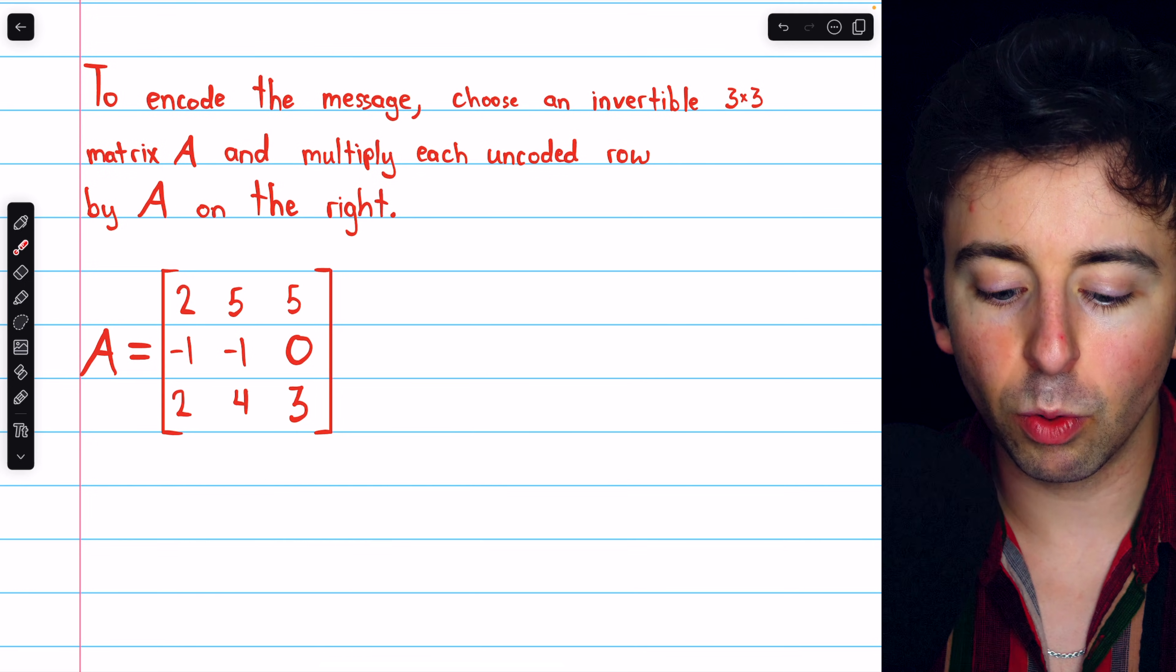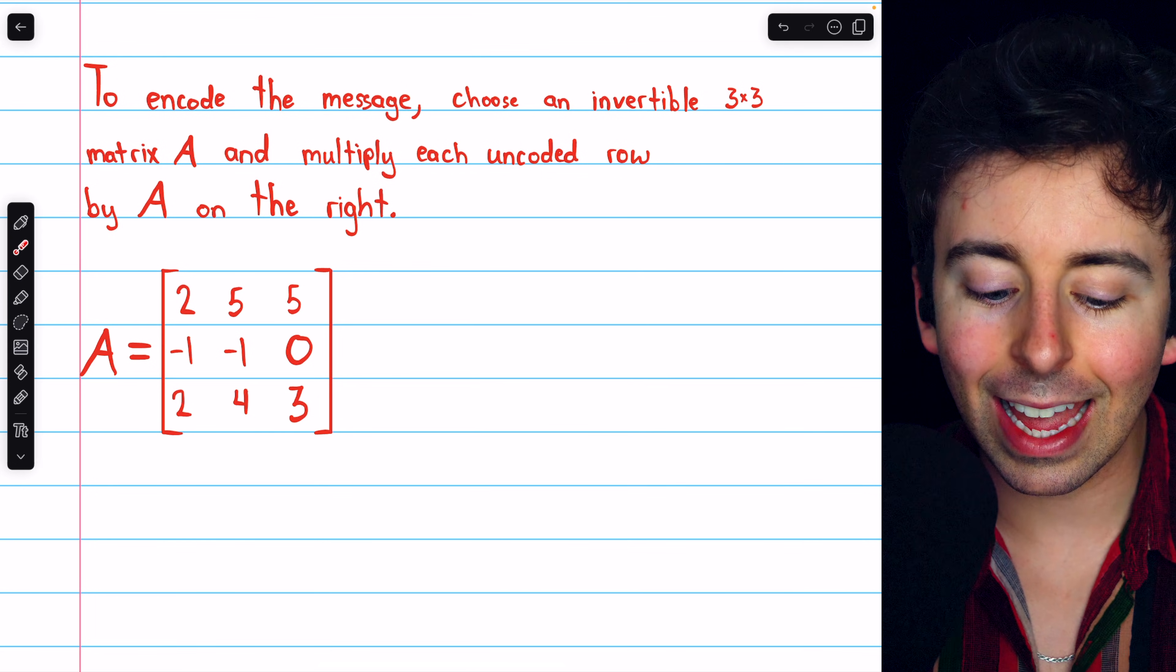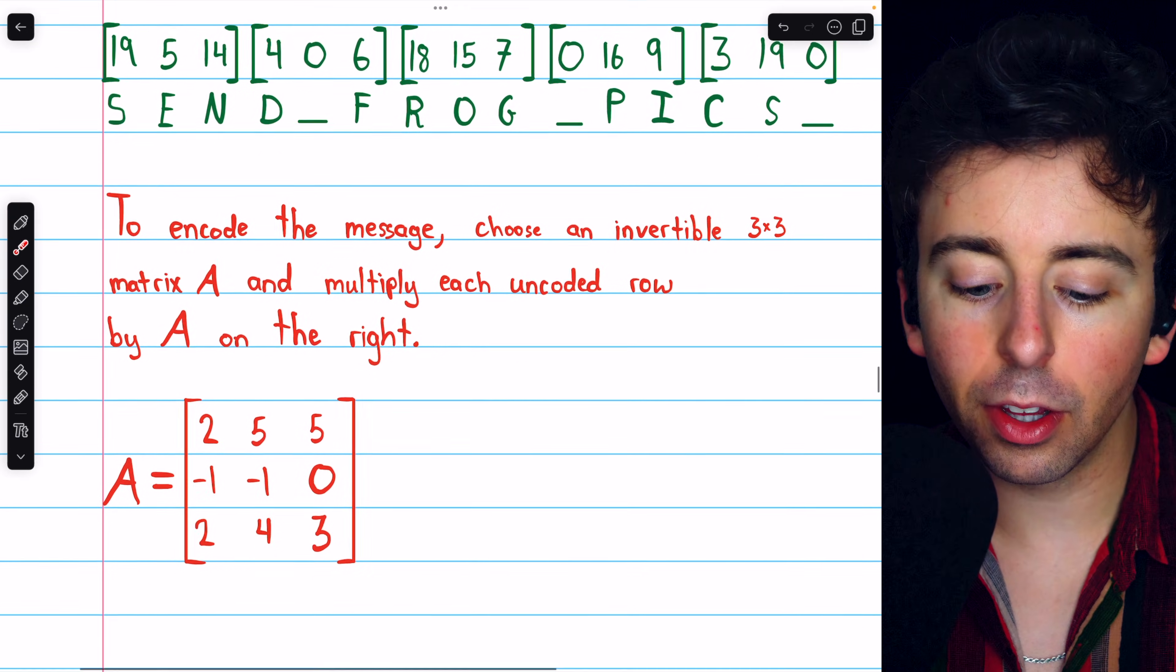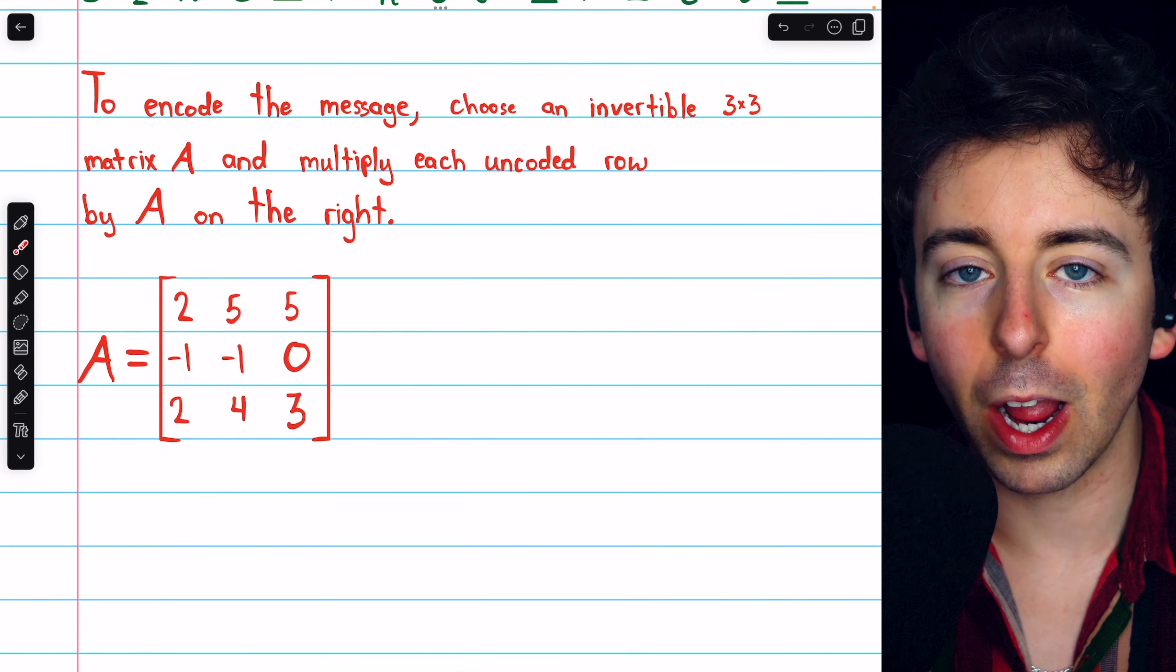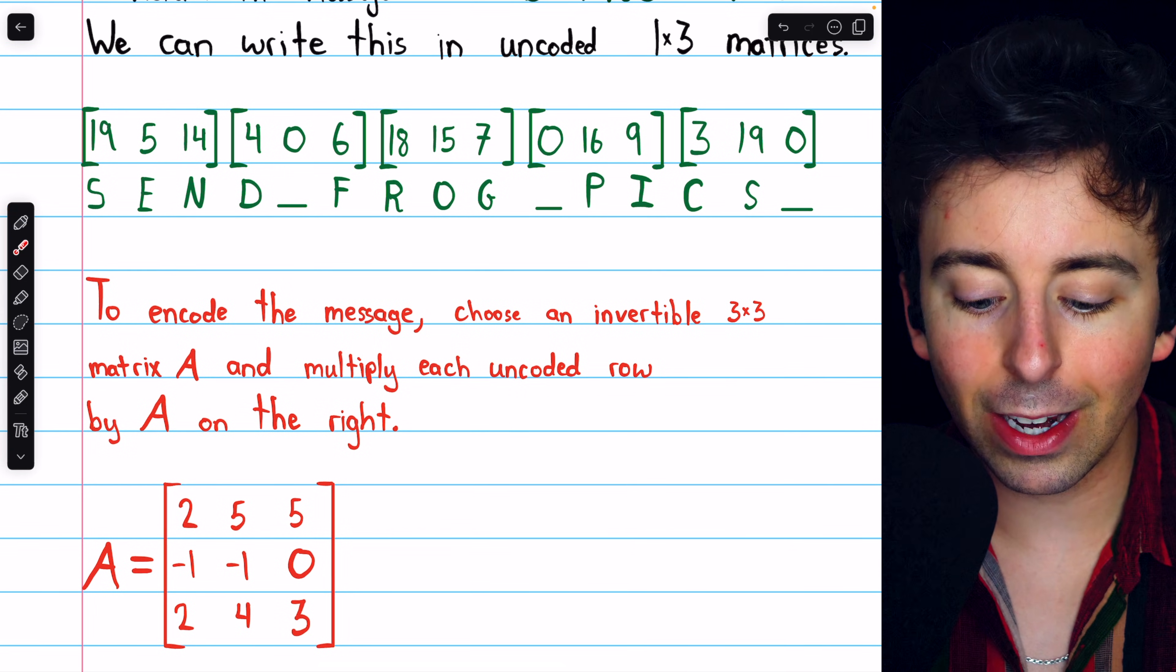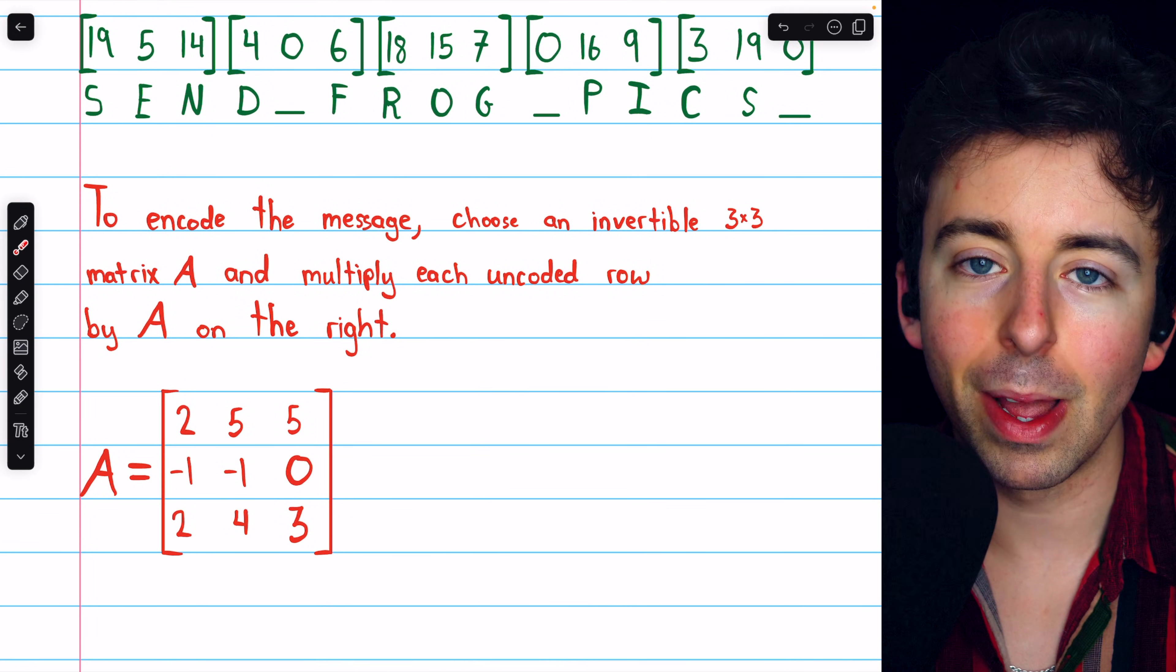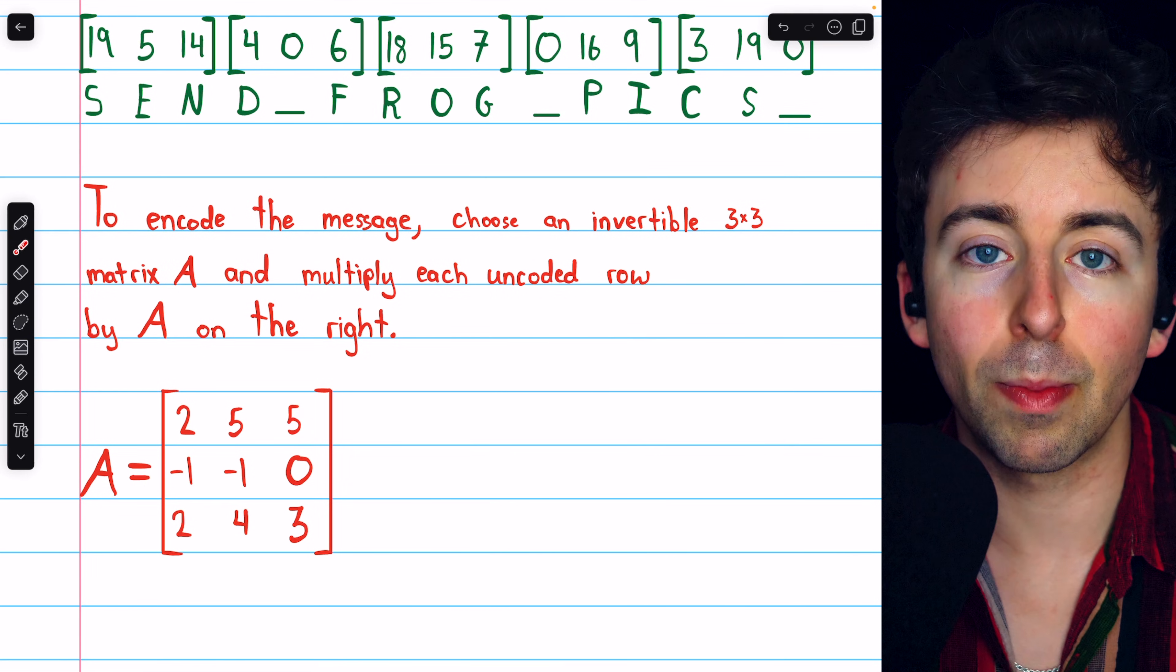So once we get that matrix, we'll multiply each uncoded row by A on the right. So we have these uncoded rows, and we'll multiply each of them by this invertible matrix on the right. Now, if we had broken this message down into 1x4 matrices, rather than 1x3 matrices, we would need to choose an invertible 4x4 matrix. But because of how we split the message up, we're going to use a 3x3 matrix.